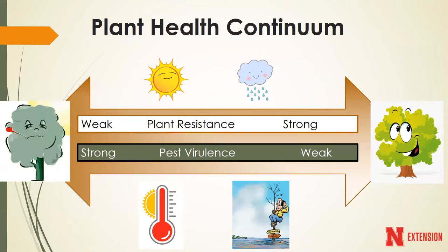We always want to be thinking about the plant health continuum. Anything that we can do to modify the abiotic or environmental conditions of the plant will greatly increase the plant's ability to fight off any diseases or insect pests that come its way.